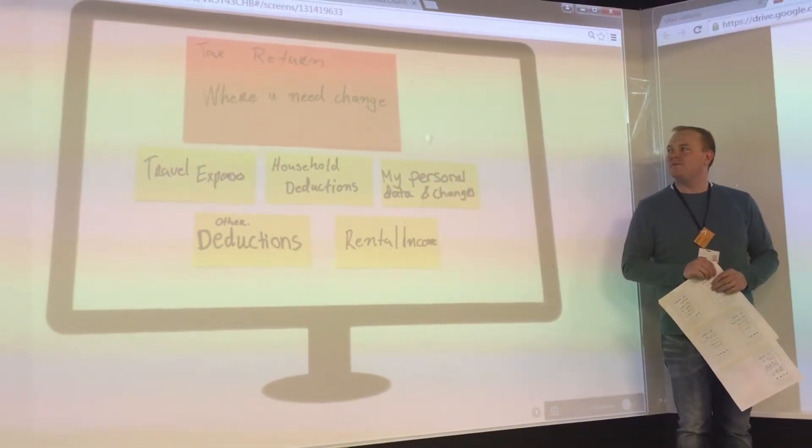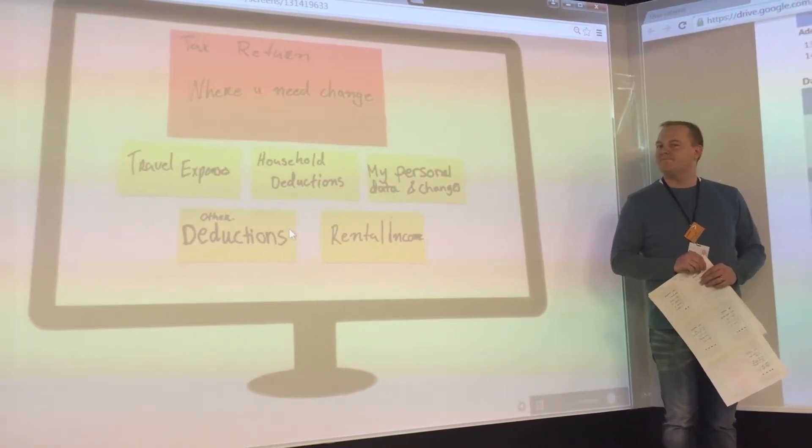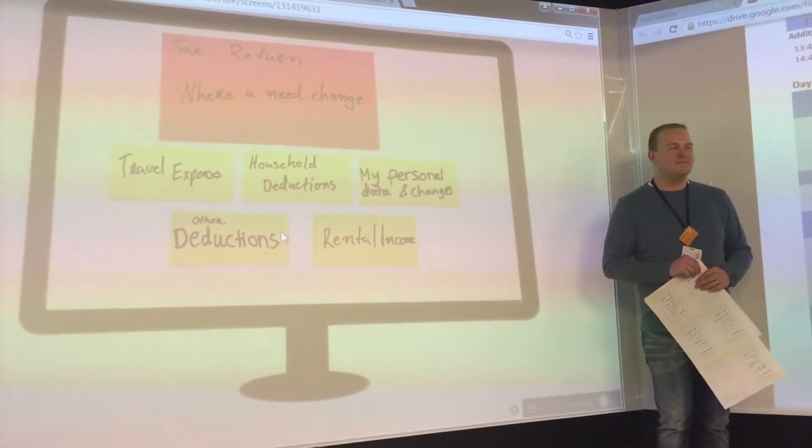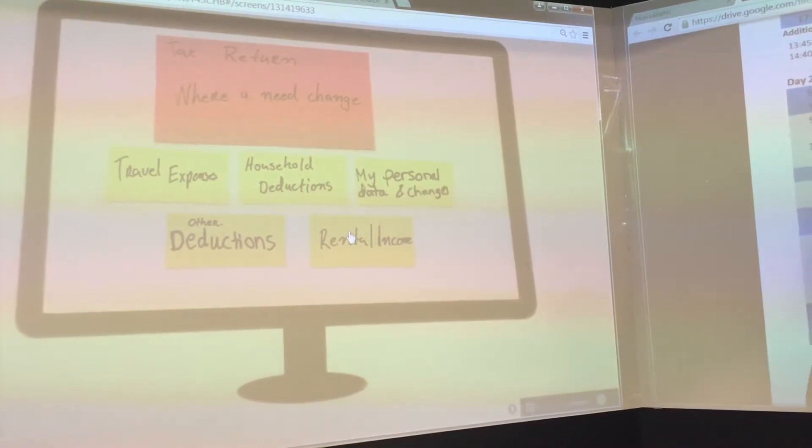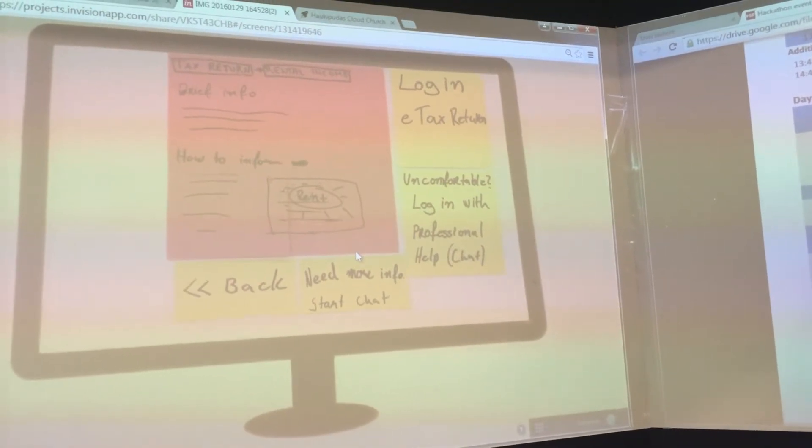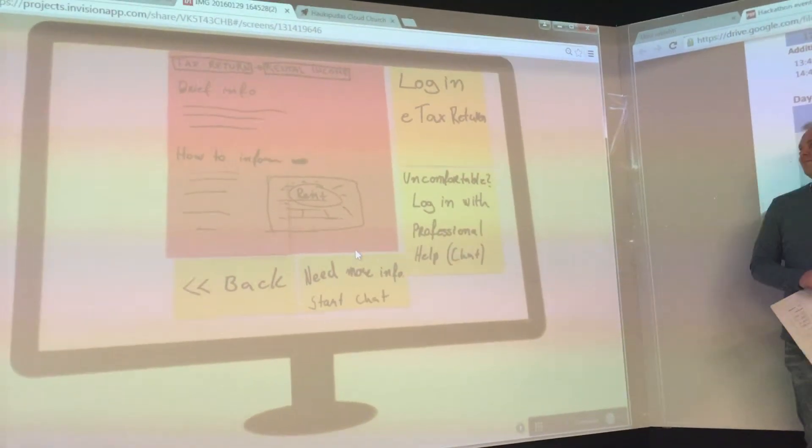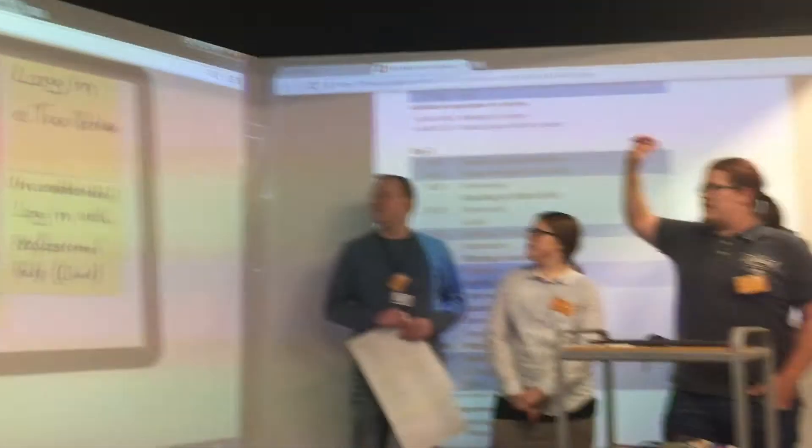Where you need to change. There's expenses, household deductions. Okay, this guy has a house and he wants to have a rental income deduction. Now there's information about rental income. If he wants to log in and make tax return in here, you can see there.